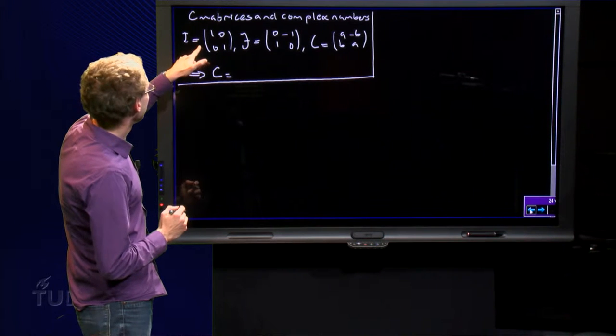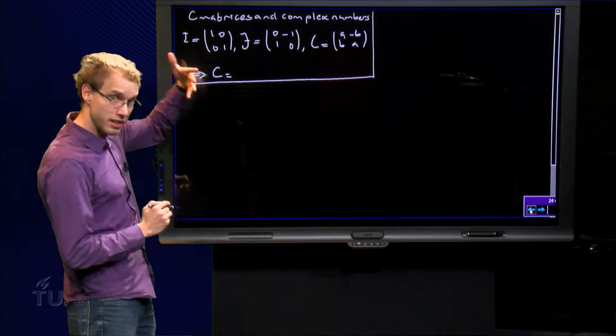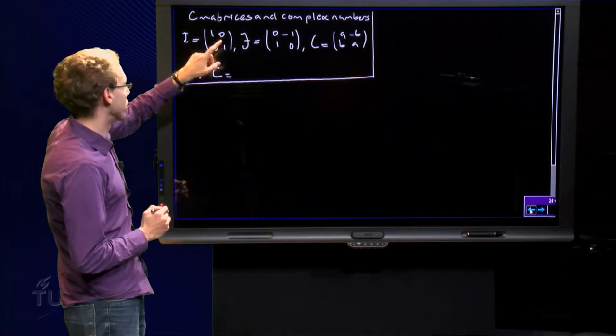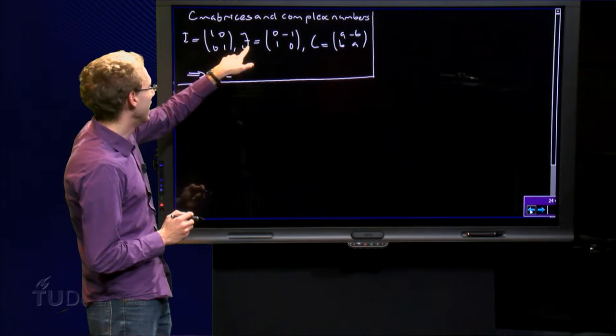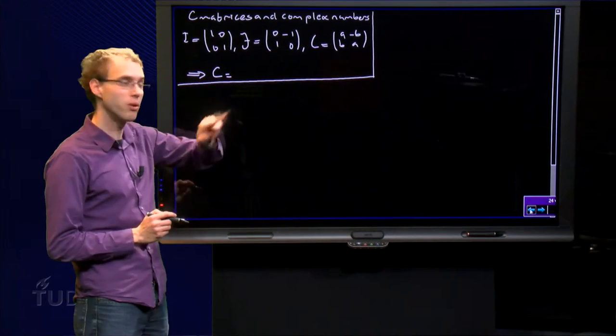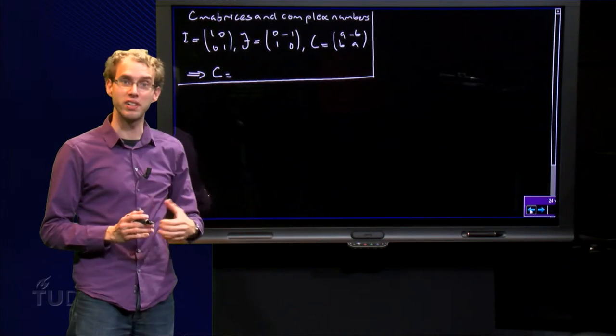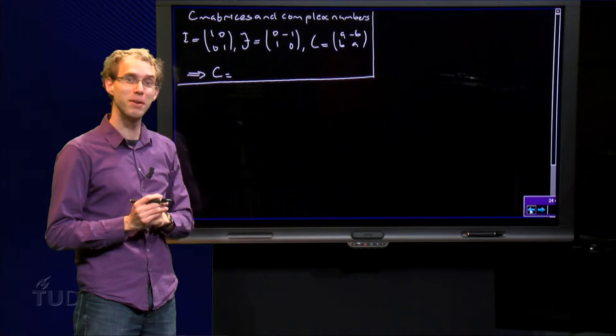Let us take the matrix I, the identity matrix, as we know 1, 0, 0, 1. And then let us define another matrix J, zeros on the diagonal, 1 and minus 1 off diagonal. So let us define a new matrix J.